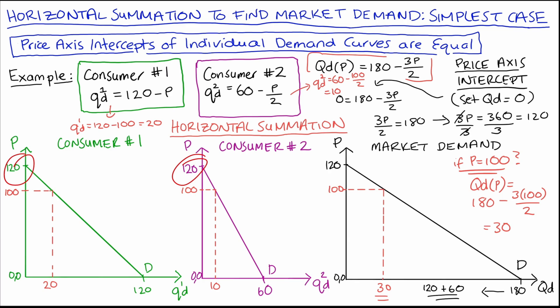A complication could occur if our consumers stop demanding at different prices, because then for some prices only some consumers are in and others are out, and we have to split up our market demand into different sections. But in this easiest case, our consumers are demanding over exactly the same range of prices and the price axis intercepts are the same, so adding it up is pretty easy. I have done a video which goes through the more complicated case — I'll link to it in the description below.